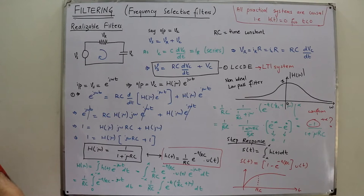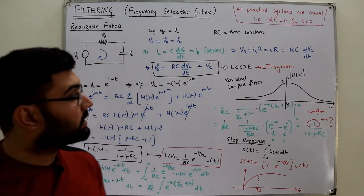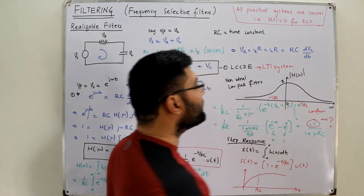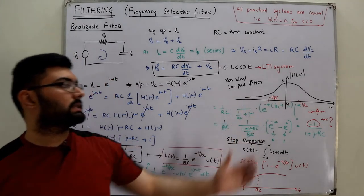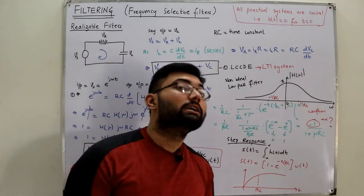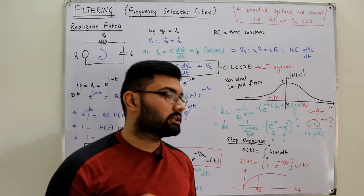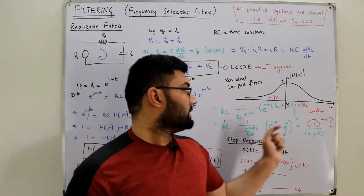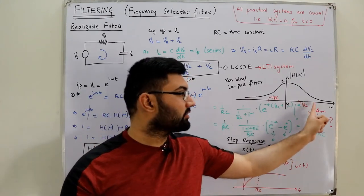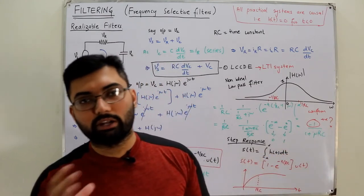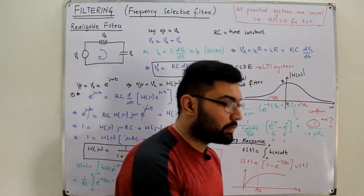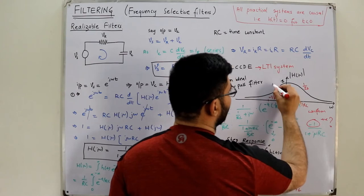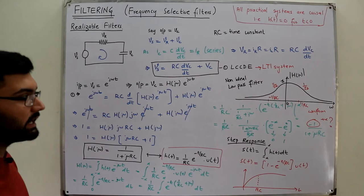We define the cutoff frequency at ω = 1/RC, and at ±1/RC on the frequency axis. At this value, the frequency response equals 1/√2 of the maximum value. This is the standard definition of the cutoff frequency for this filter, separating the passband from the stopband.